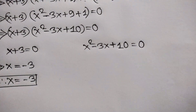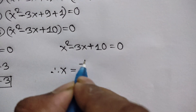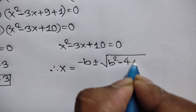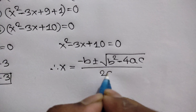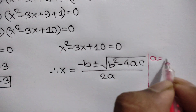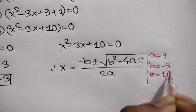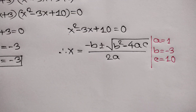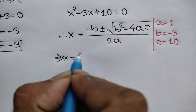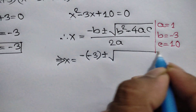Now from the quadratic factor we can use the quadratic formula: x is equal to minus b, plus or minus the square root of b squared minus 4ac, over 2a. Here a is equal to 1, b is equal to negative 3, and c is equal to 10. So x is equal to minus b, that means negative negative 3, which we write as positive 3, plus or minus the square root of...